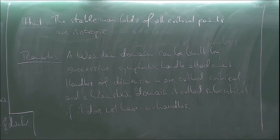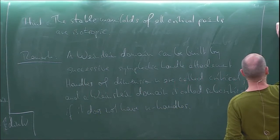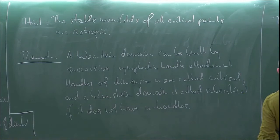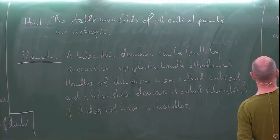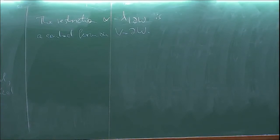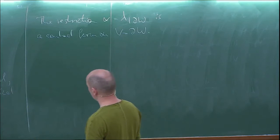Subcritical Weinstein domains will play a special role in the theory — it will turn out that their symplectic homology will be zero. The boundary of a Weinstein domain actually has more structure. The restriction alpha, which is lambda restricted to the boundary of W, is actually a contact form on the boundary. You can see this in the examples: if I take this form and restrict it to the sphere I get a contact form, and the same for the canonical one-form restricted to the unit cotangent bundle.